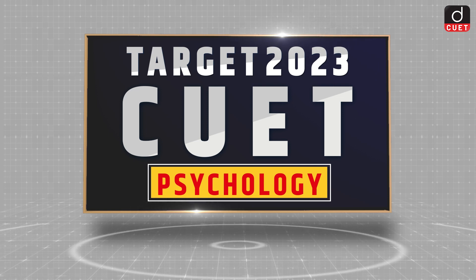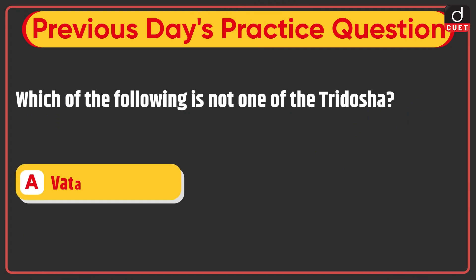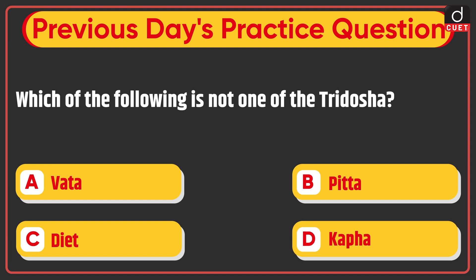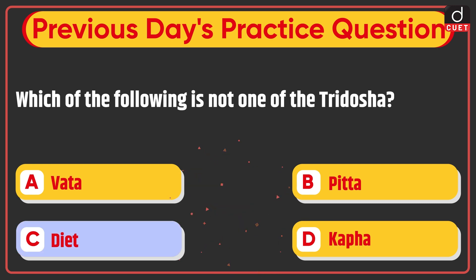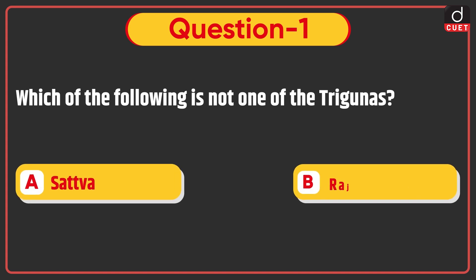Hello everyone, welcome to Target CEOet Psychology. Let's begin with the previous day's practice question. The question was: which of the following is not one of the three doshas? The correct answer is option C: diet. Now let's begin today's session.